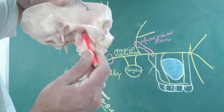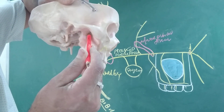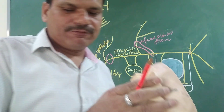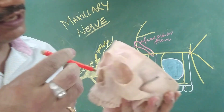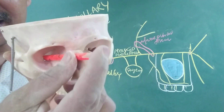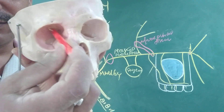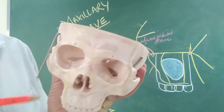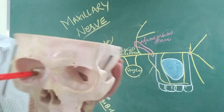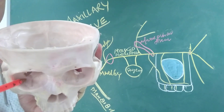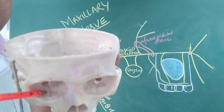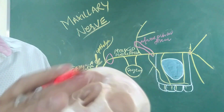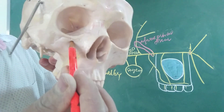This is the pterygopalatine fissure and medial to the pterygopalatine fissure is the pterygopalatine fossa. From the pterygopalatine fossa, it passes through the inferior orbital fissure, lies in the floor of the orbit, passes through the orbital groove and then the orbital canal, and emerges through the infraorbital foramen.